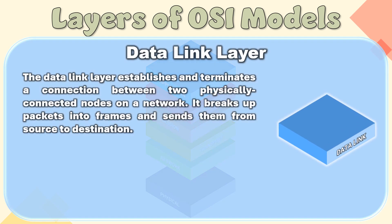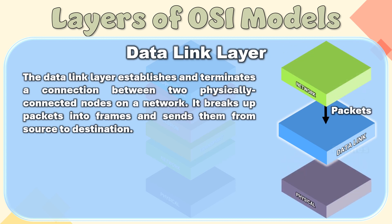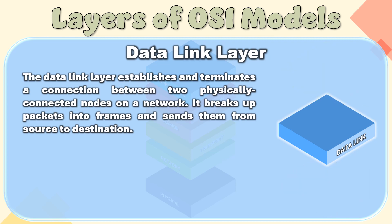Layer 2 – Data Link Layer (DLL). The data link layer establishes and terminates a connection between two physically connected nodes on a network. It breaks packets into frames and sends them from source to destination. This layer is composed of two parts.